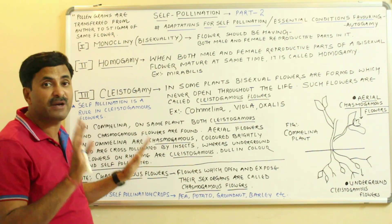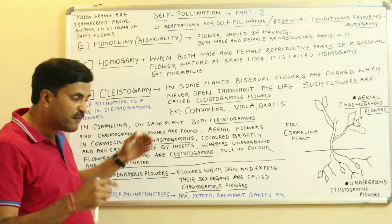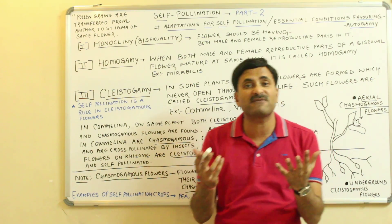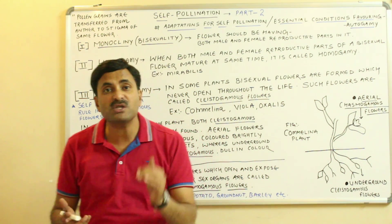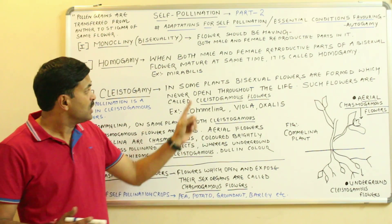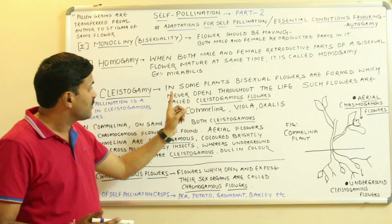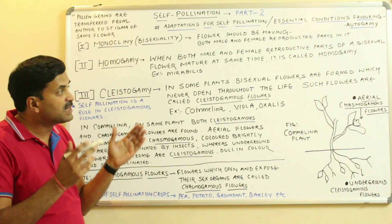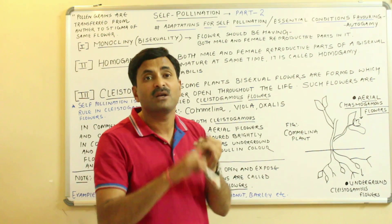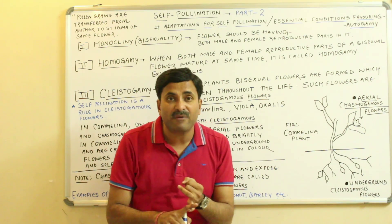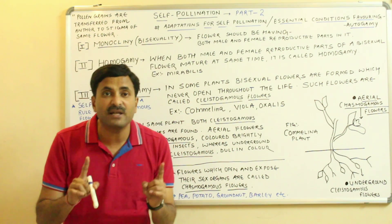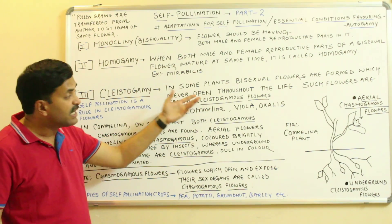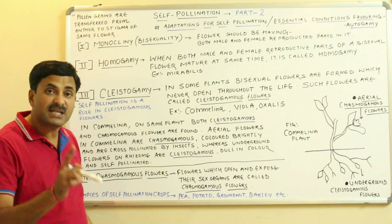The third adaptation is very important — cleistogamy. Cleistogamous flowers show cleistogamy. In contrast, you must also know what chasmogamous flowers are. In some plants, bisexual flowers are formed which never open throughout their lifetime. In such a flower, the male and female reproductive parts are not exposed at all. Such a flower is called a cleistogamous flower.